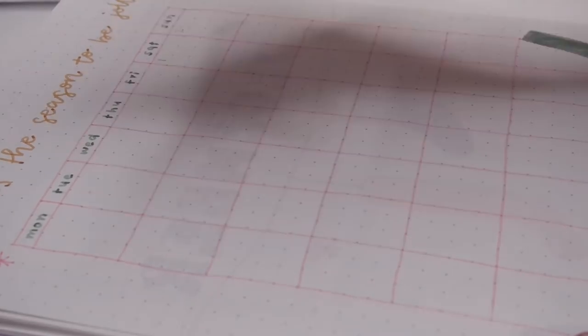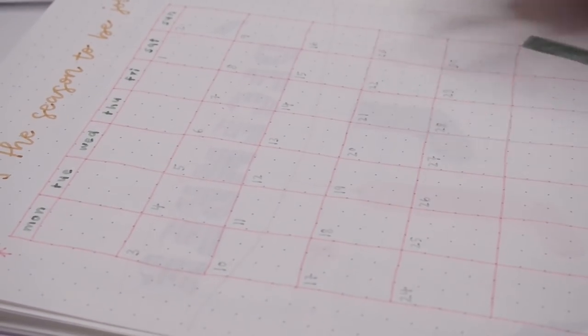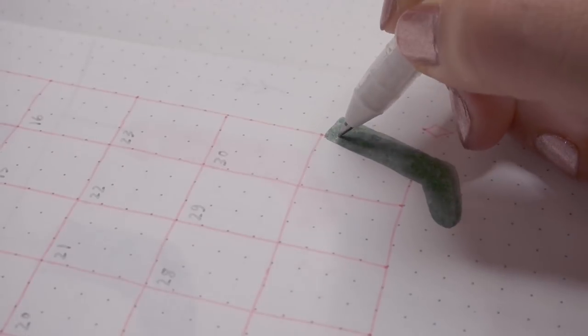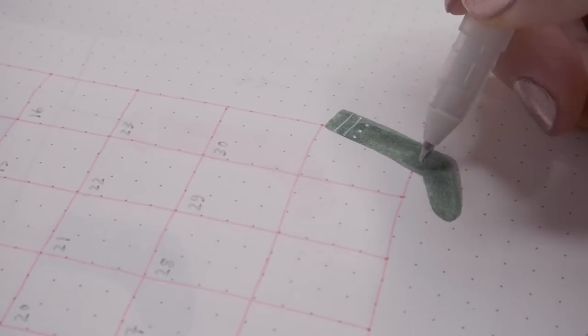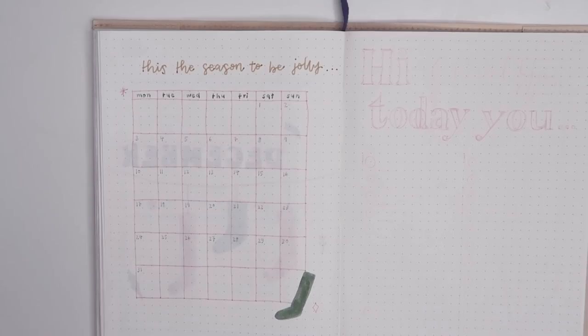As usual, I'm using my favorite gray fineliner to add in the dates. I love using the gray fineliner whenever I'm using a lighter color palette because it manages to keep the fluffy feeling and lightness that I want to achieve with the colors.